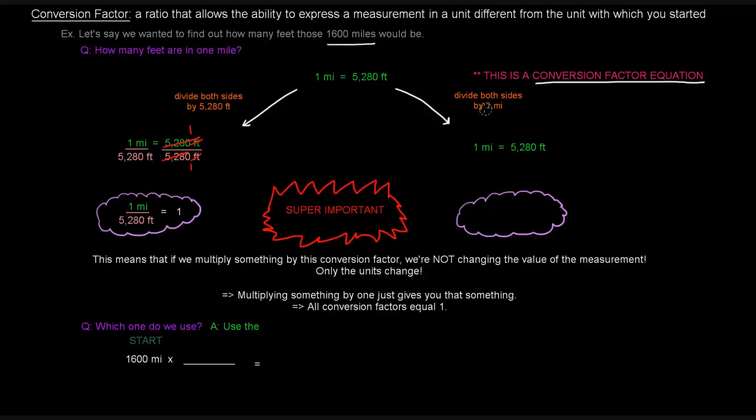We could do the same thing except divide both sides by one mile instead. What happens is that on the left side, the miles cancel. We get one equals 5,280 feet over one mile. These are called conversion factors. This is a conversion factor, and that is a conversion factor.